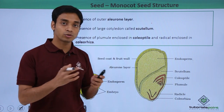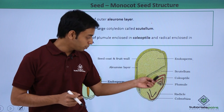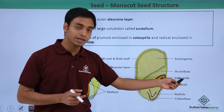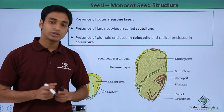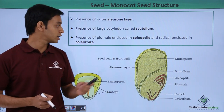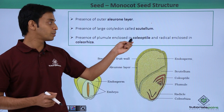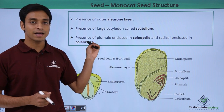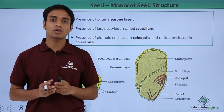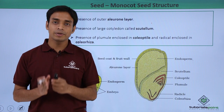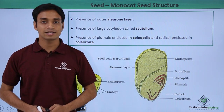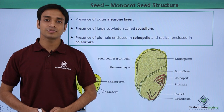The plumule and the radicle are enclosed and protected by different structures. The plumule is enclosed by a structure known as the coleoptile, whereas the radicle is enclosed by a structure known as the coleorhiza. This concludes our discussion of the typical structure of a monocot seed.